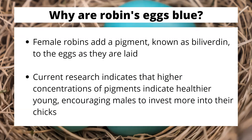Female robins add a pigment known as biliverdin to the eggs as they are laid. Current research suggests that the higher the concentration of this pigment, the more it will entice male robins to invest in taking care of their young, showing the young are healthier and the female was stronger and able to lay stronger eggs. Because a lot of our Oscines have males that participate in rearing the young, though males won't put in nearly the energy that the female will.